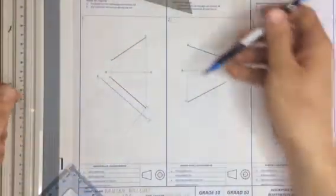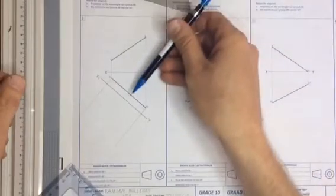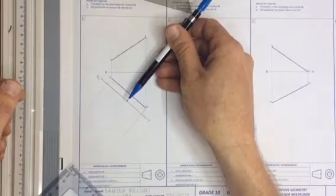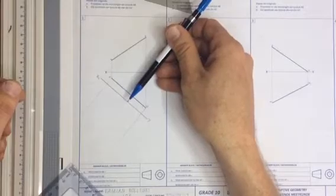Reason being is that I'm now going to look at this line at 90 degrees. I know that if I'm looking at a line at 90 degrees I'm then seeing a true length.